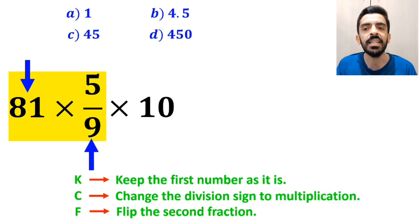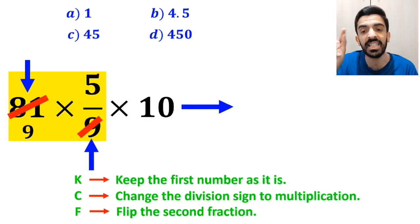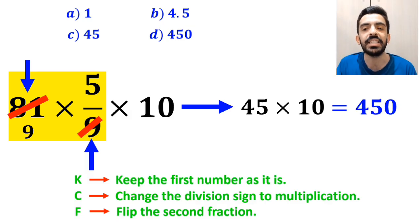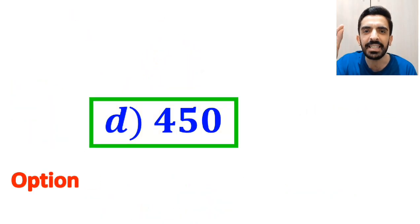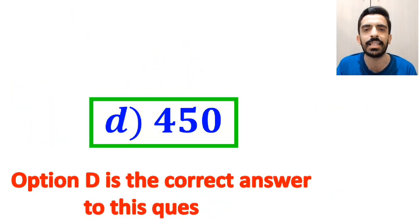Now we can easily simplify the number 81 with the 9 in the denominator, and instead of this expression, we can write 45 multiplied by 10, which finally gives us the answer 450. Therefore, option D is the correct answer to this question.